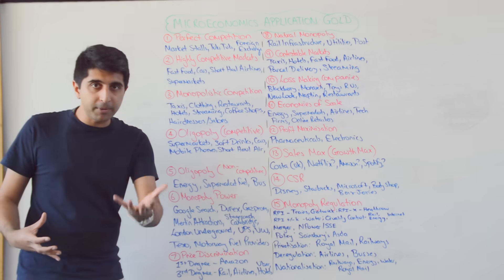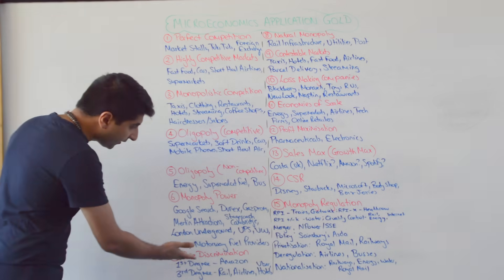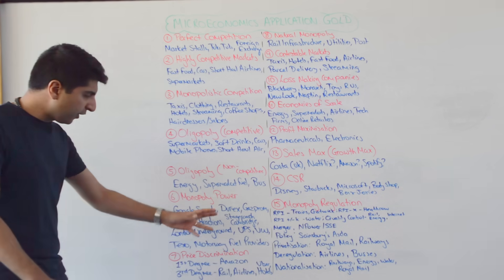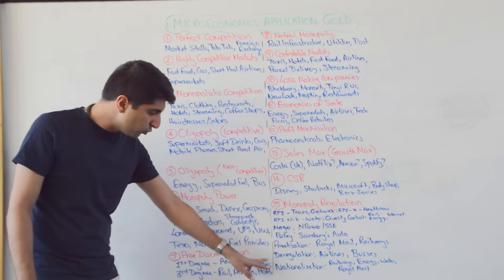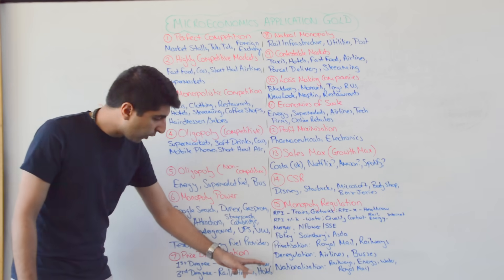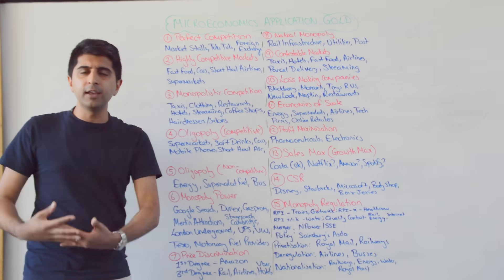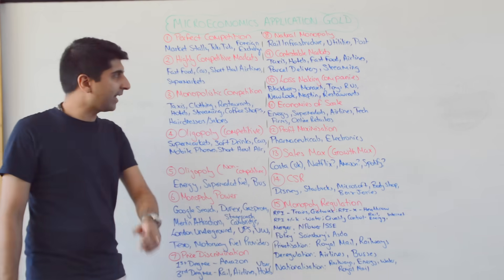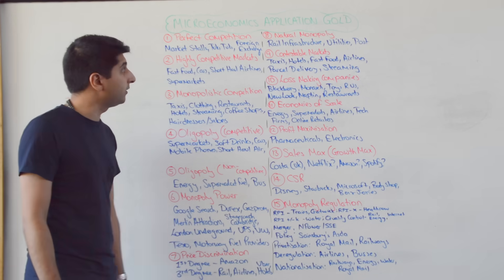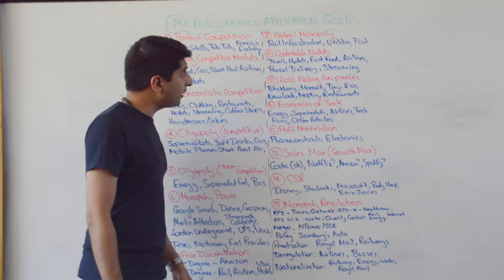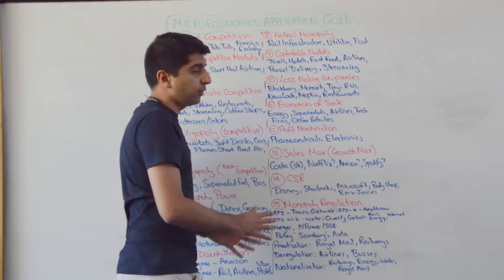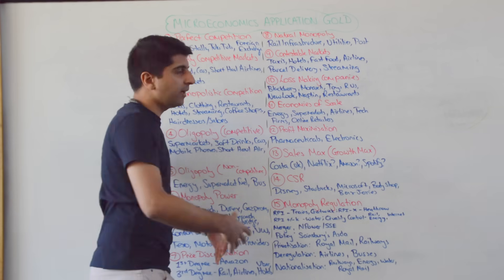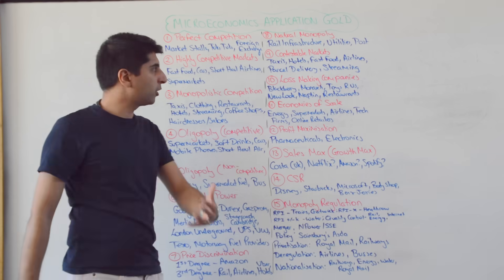Real-life examples of price discrimination. First degree: Amazon — go and research that, great example. Third degree: rail, airlines, Uber with surge pricing, and hotels — increasing prices when there is inelastic demand, reducing prices when there is price elastic demand. Examples of natural monopoly: rail infrastructure — Network Rail, utilities, and posts. A lot of these markets are natural monopoly markets. Real-life examples of contestable markets: taxis, hotels, fast food, airlines, parcel delivery, and streaming — think about firms that have entered these markets, clearly illustrating they are very contestable.